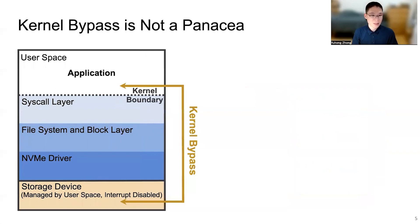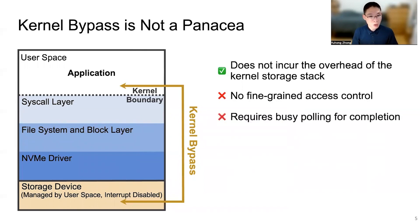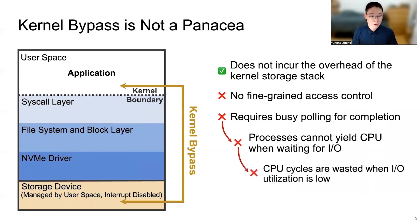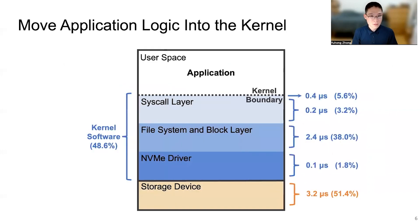However, kernel bypass is not a panacea. It does not incur the overhead of the kernel storage stack, but using kernel bypass also means there is no fine-grained access control, because any process can access the device directly. What makes it worse is that it requires busy polling for completion since the interrupt of the storage device is disabled. That means processes cannot yield CPU when waiting for I/O. CPU cycles are wasted when I/O utilization is low, and CPU cannot be shared efficiently among multiple processes. So kernel bypass doesn't fit the need for people who need isolation and want to use CPU more efficiently. The question then becomes: how to reduce the kernel software overhead without bypassing the kernel.